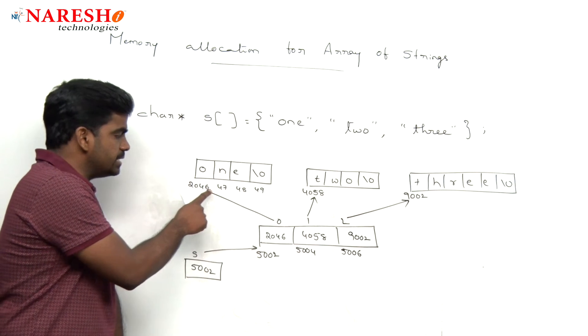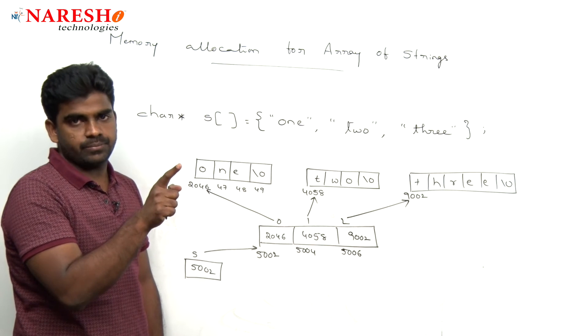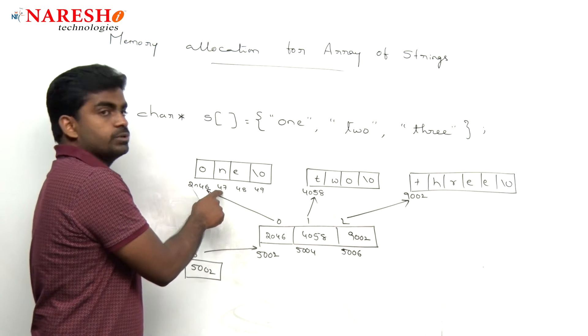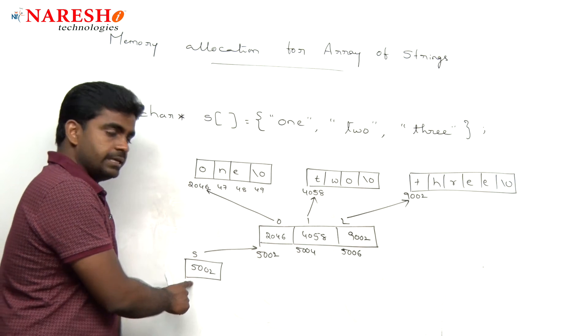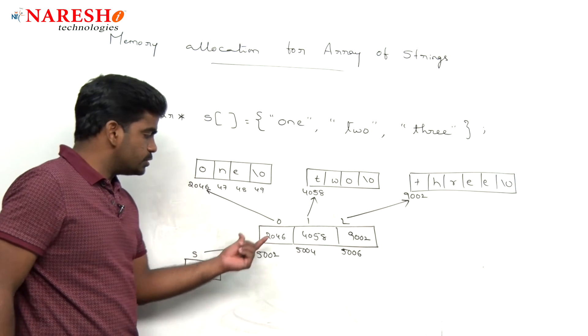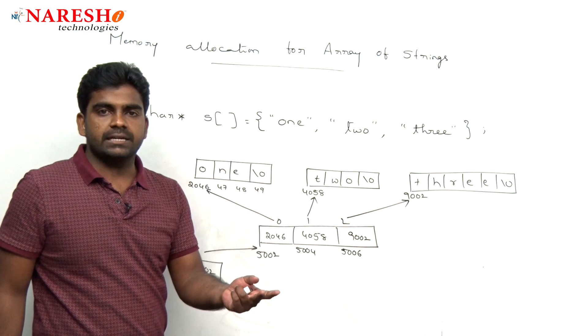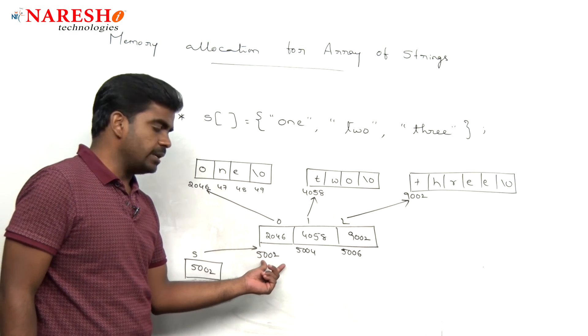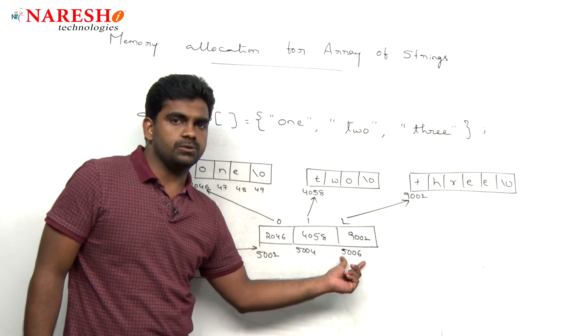Here, that next address is 2047 because the character size is only 1 byte. So, that next location is 4748, 49 like this. And what is the size of this one? Because it stores integer, address is like integer and the size is 2 bytes. So, here it is 2 bytes 5002, next one is 5004, next one is 5006 like this.